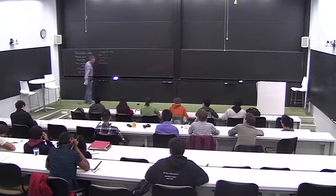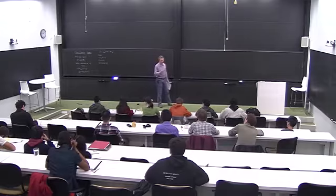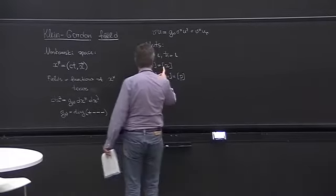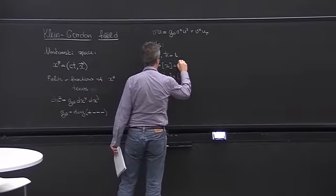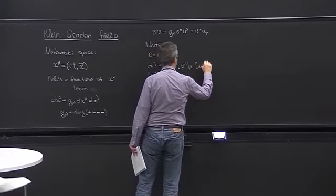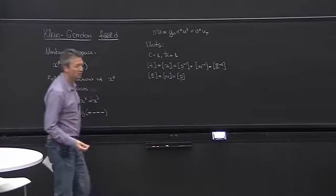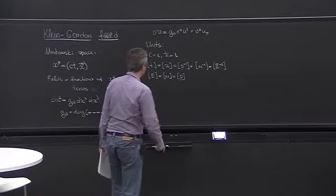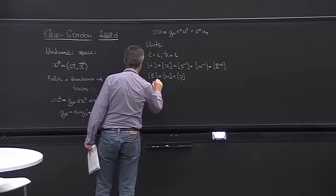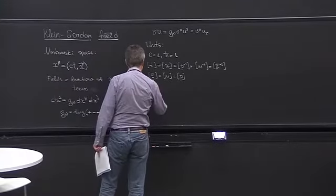When we put h-bar to one, h-bar is on the right-hand side of the uncertainty principle, so p times x is now dimensionless. Distances and time intervals are therefore measured in units inverse to those of momentum, mass, and energy. There is just one basic unit, which we choose to be the unit of energy. We will use electron volts as our basic unit.